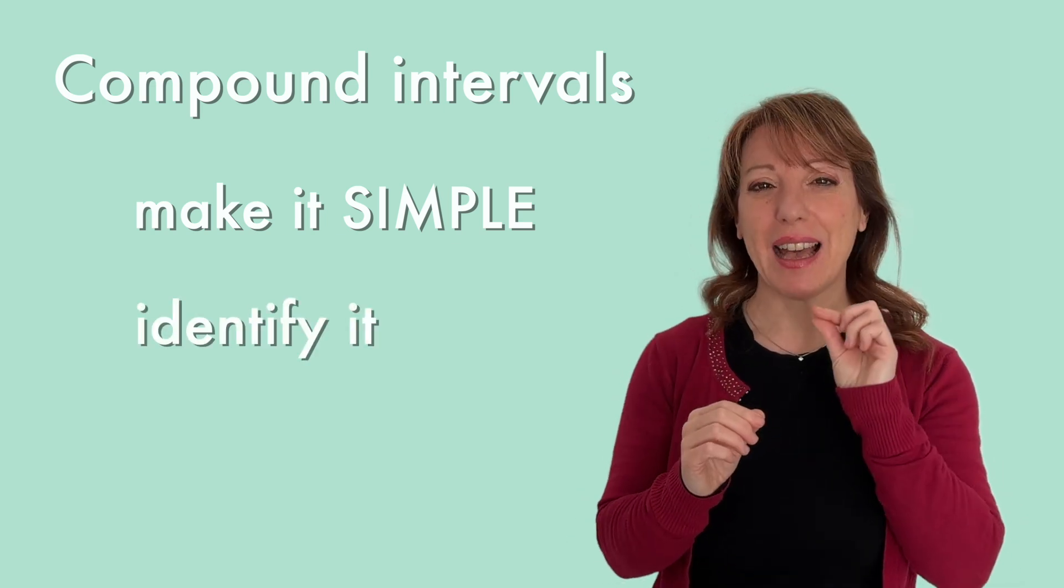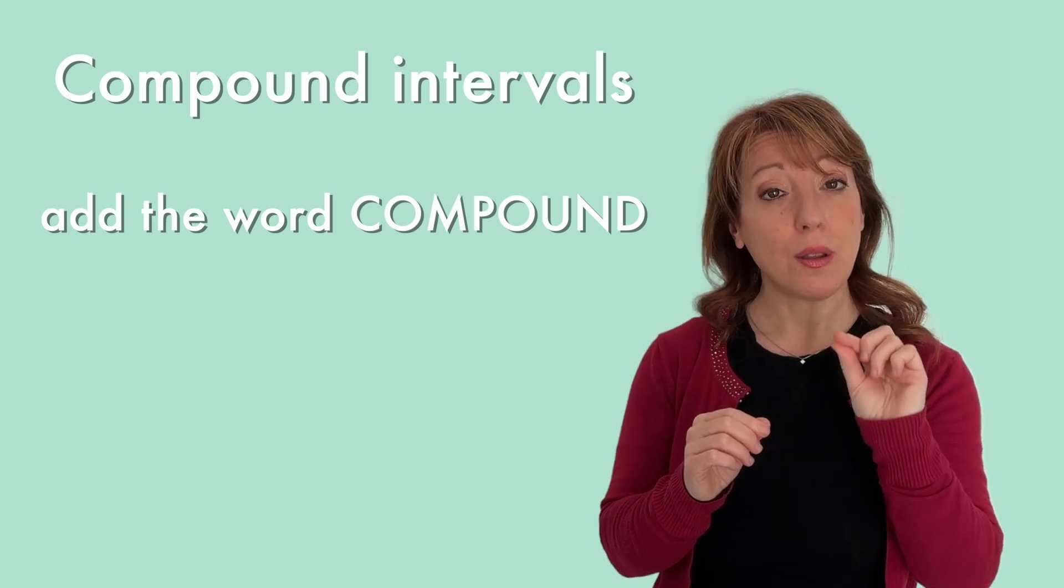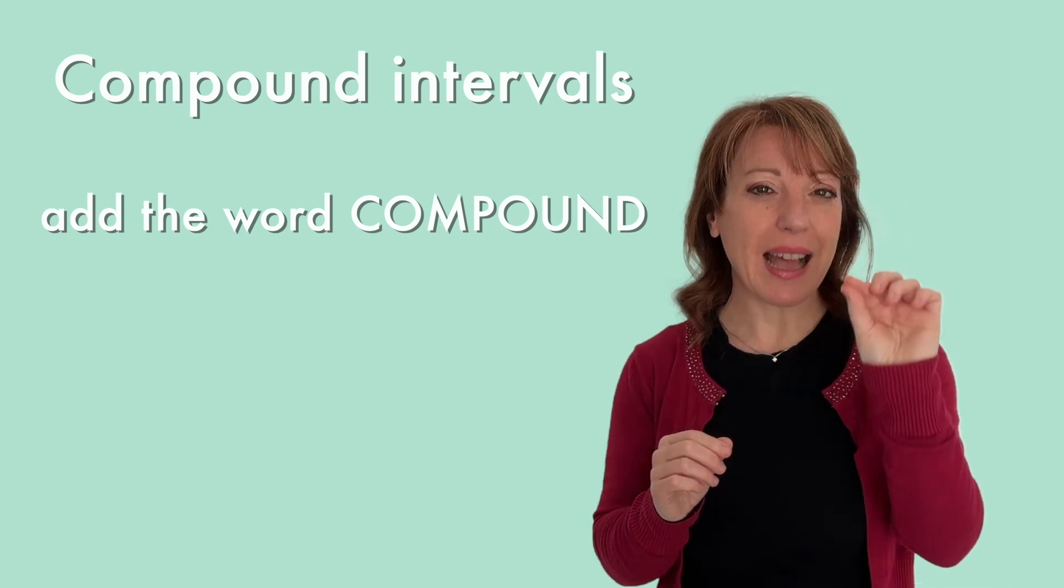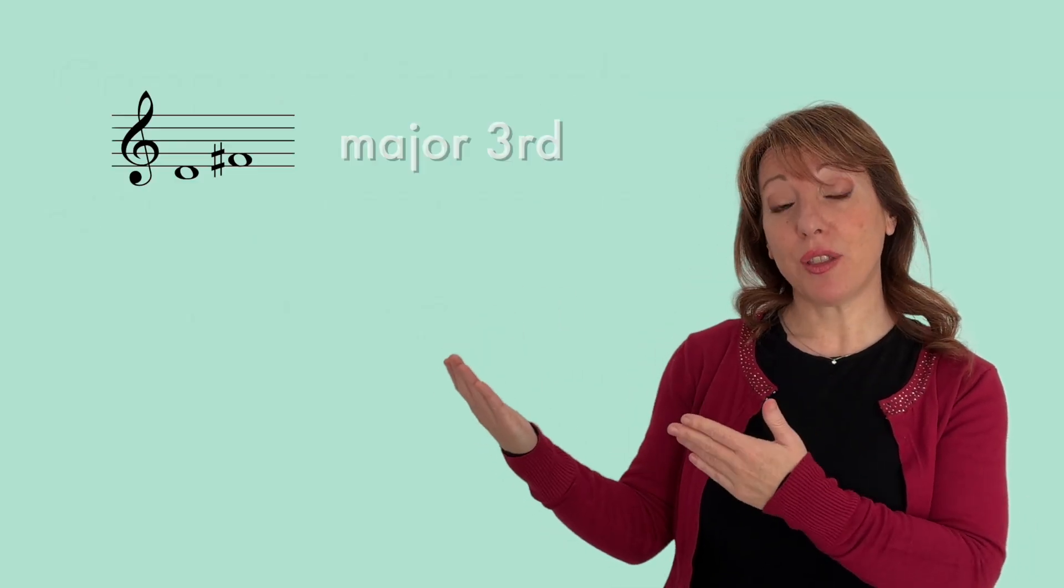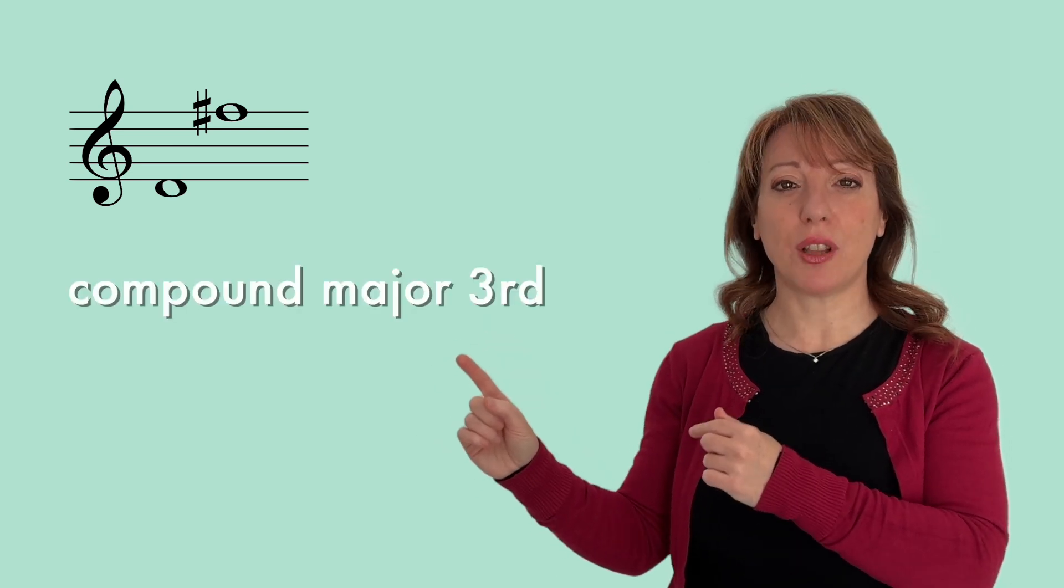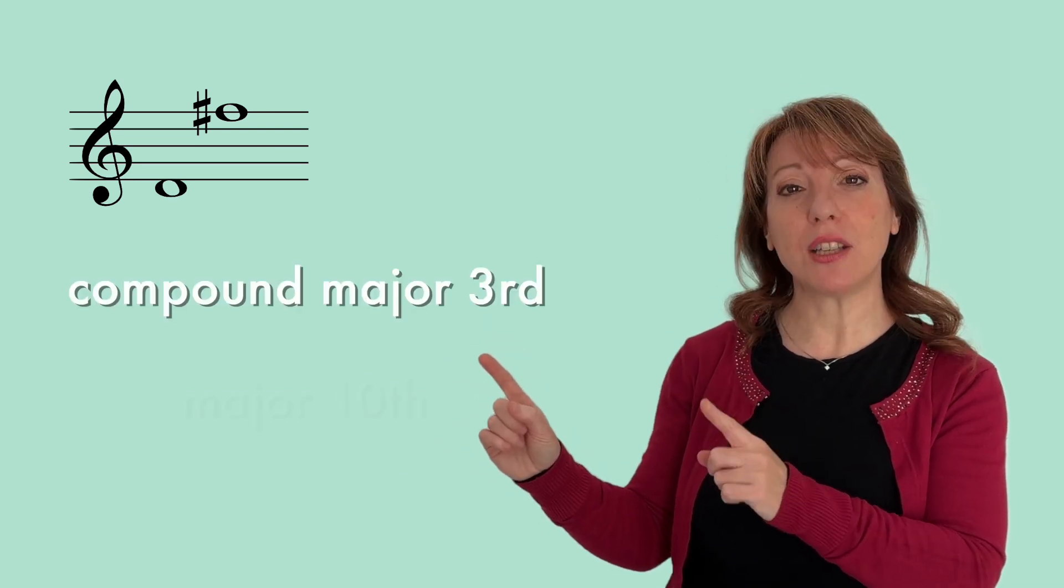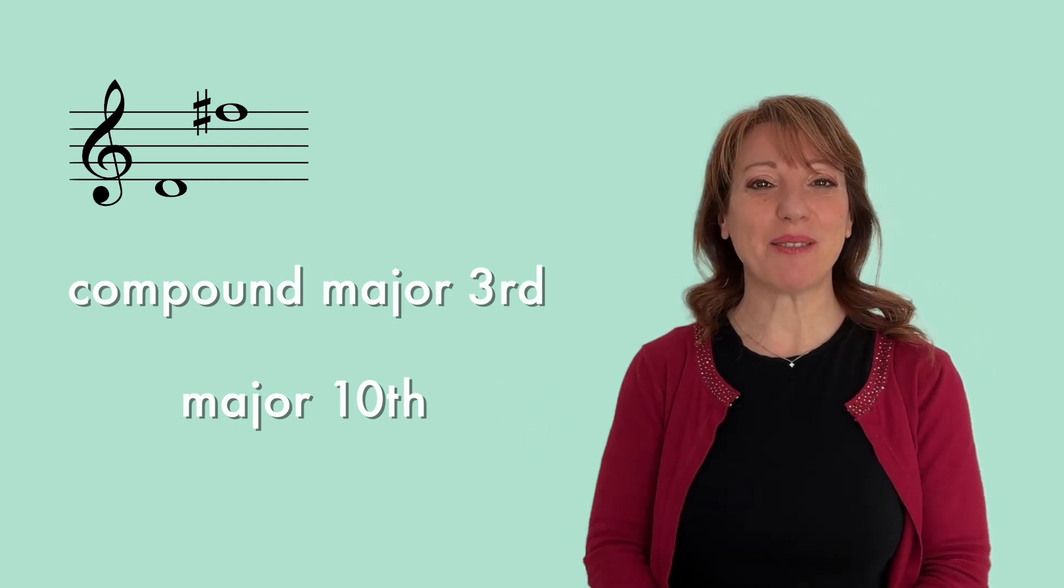And then we either add the name compound to what we find, or we keep the type and we add seven to the number that we find. For example, this is a major third, D-F sharp. Simple. If F were an octave higher, it is a compound interval. So this interval could be called a compound major third or a major tenth because it's three plus seven, ten. Easy.